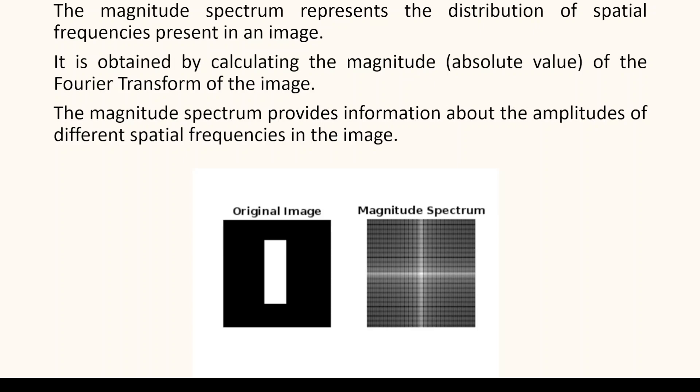We should now look at the magnitude spectrum to further understand how an image is represented in the frequency domain. The magnitude spectrum provides information about the amplitude of different spatial frequencies in the image and represents the magnitude or strength of each frequency component. It is the distribution of spatial frequencies obtained by calculating the magnitude of the Fourier transform of the image. Higher magnitude indicates the presence of stronger frequency components such as edges or high frequency details, while lower magnitude indicates smoother regions or low frequency components. Bright regions in the magnitude spectrum correspond to higher amplitude or stronger frequency components, while dark regions correspond to lower amplitude or weaker frequency components, as is clearly visible in the magnitude spectrum image of the original image.